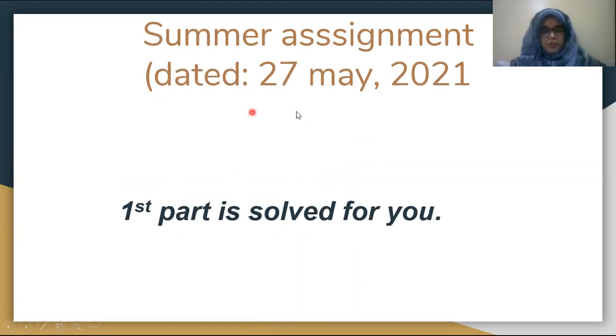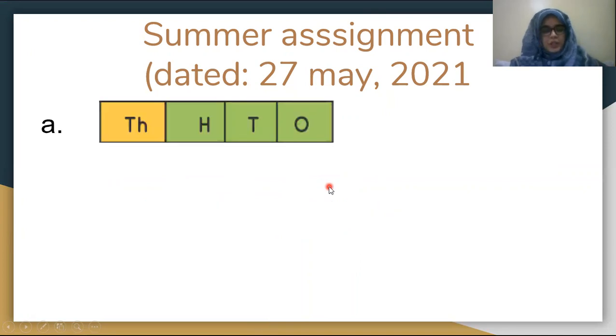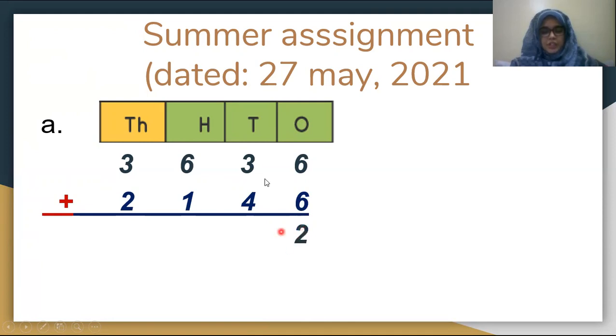Let's start our summer assignment on the date of 27th May 2021. Add the following. Part A has been solved for you. 3636 plus 2146. 6 plus 6 is 12. We write 2 below and carry 1 to the next place value. 1 plus 3 is 4, and 4 plus 4 is 8. 6 plus 1 is 7, and 3 plus 2 is 5. 5782 is your total answer.